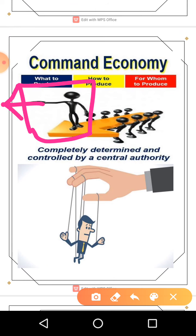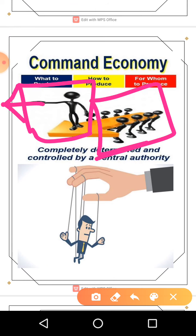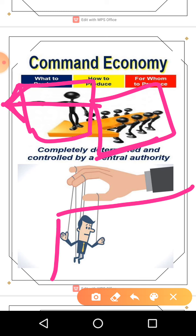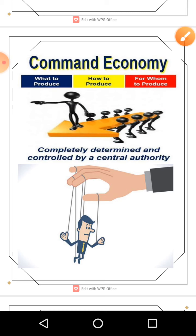You can see in the picture here: the command economy is explained — the government is pointing towards something, the whole market is helping reach that goal. This is the government, this is the market, and this is the economy — government is controlling everything.